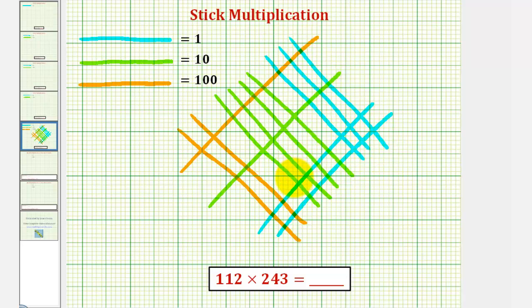The intersection points represent our product. So we'll work our way from left to right. Each intersection point of two oranges represents 100 times 100, or 10,000. So notice here we have 10,000 plus 10,000, or 20,000.